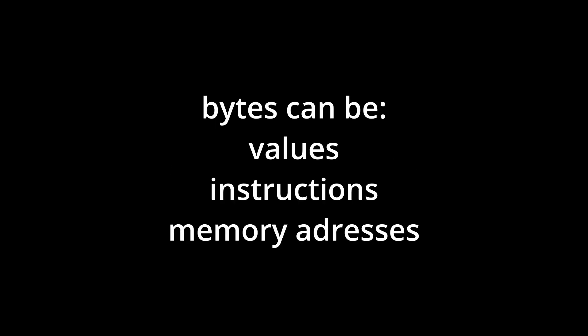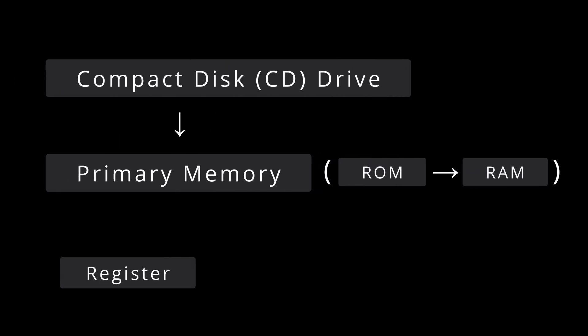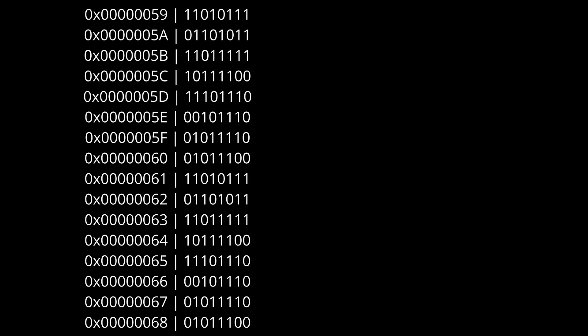Ok, let's review. Computers store information in bits, which can be either 0 or 1. Groups of 8 bits make bytes, which can represent values, instructions, and memory addresses, and groups of bytes can give even bigger values. The processor loads programs from the CD drive into ROM, which can manipulate values in RAM. Every byte corresponds to a specific instruction which tells the processor what to do, and after doing millions of these instructions per second, the processor can run just about anything.